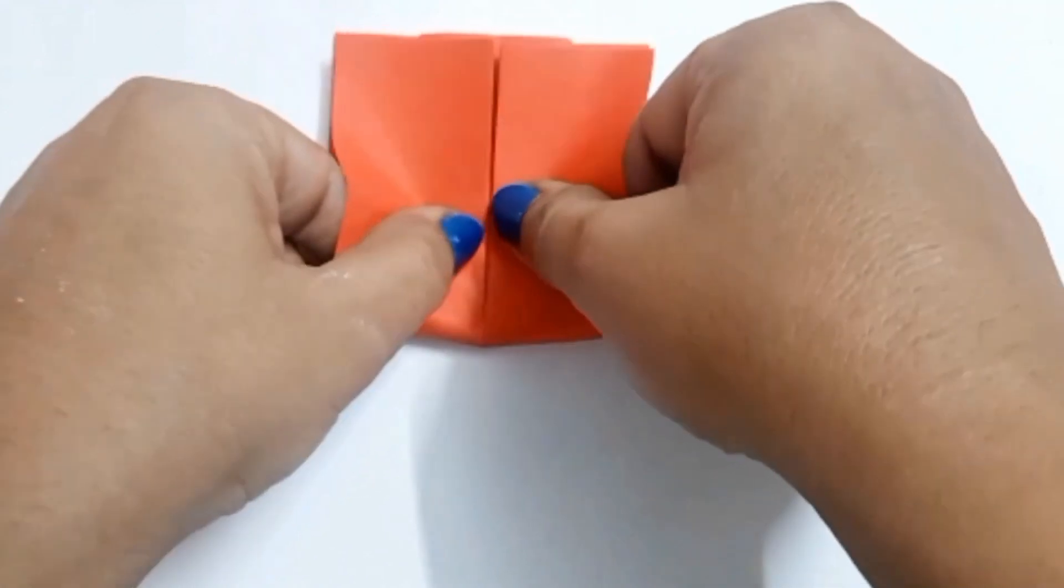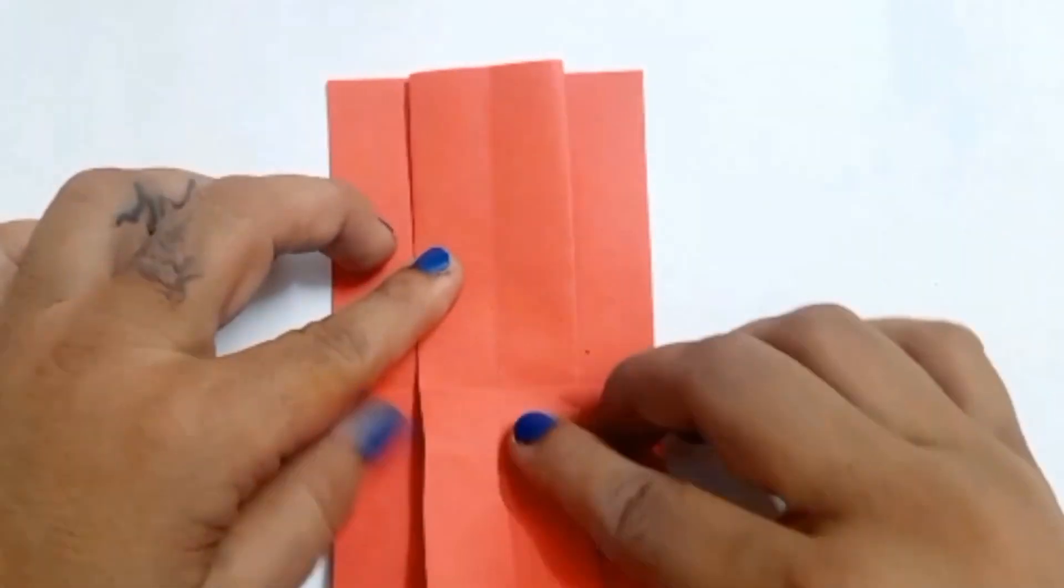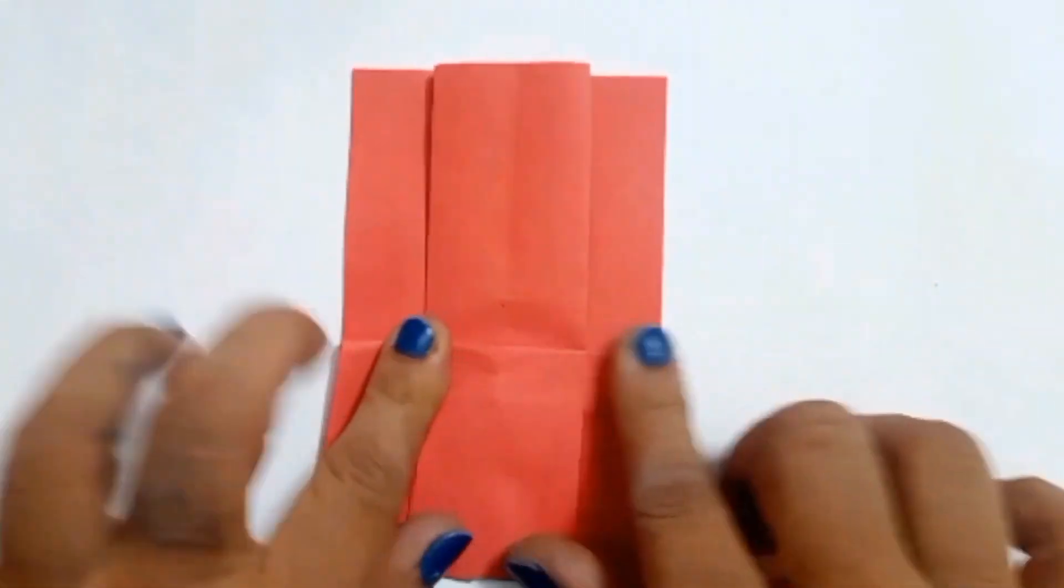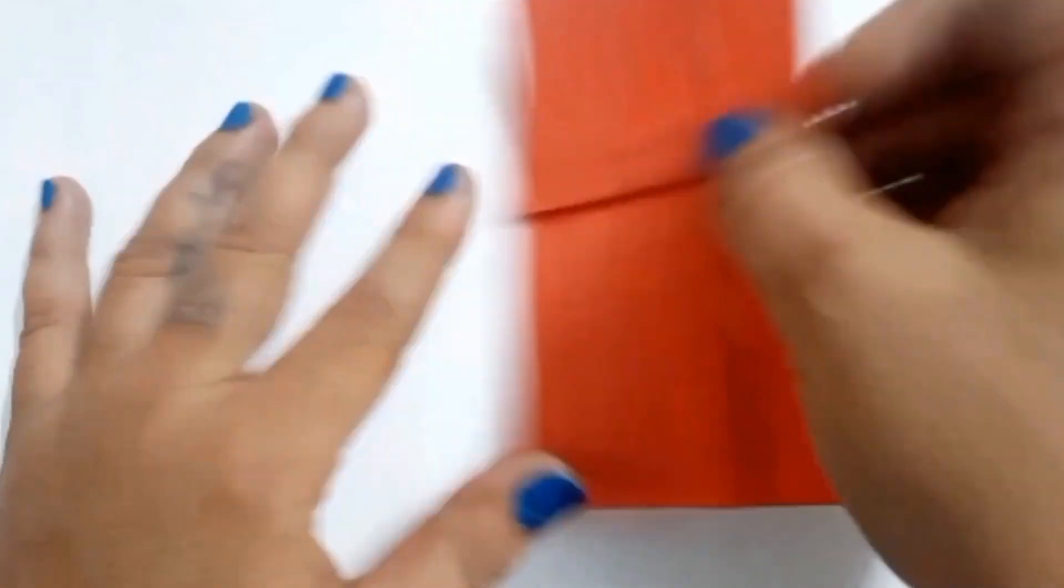Now fold to make a crease and fold back. Change the direction. Turn over.